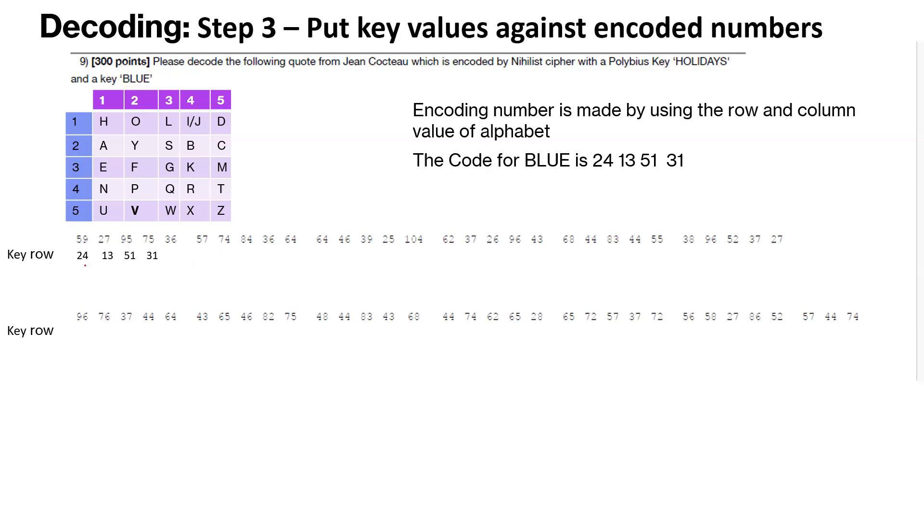We will go ahead and place the key below the encoded value, which was provided. So we start placing the key. So once we run out of the key values, we repeat the key again. So we again start with 24, 13, and we keep on going so forth until we have put the key value or the component of key value against each of these encoded numbers.